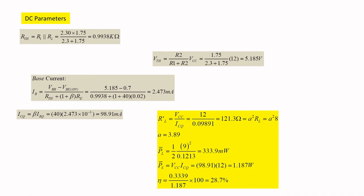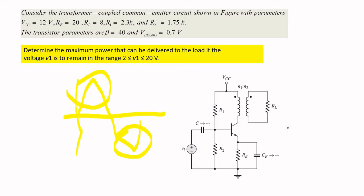Now, we want to find the efficiency. The efficiency formula is load power divided by source power. Source power is calculated by Vcc times ICQ. The load power is calculated by 1/2 Vp squared divided by RL dash, because we want to find across this point. That is RL dash.